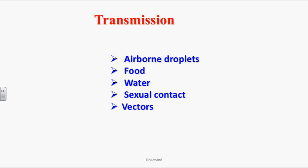The transmission of bacteria — how bacteria get transmitted. By airborne route through the respiratory route, we can inhale airborne droplets and get infections. By contaminated food, by contaminated water, by sexual contact such as gonococcal or chlamydial infections. We can also get infections by vectors such as insects and mosquitoes, and by ticks — for example, Rocky Mountain spotted fever.